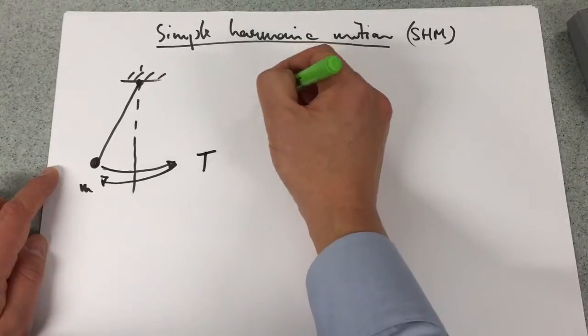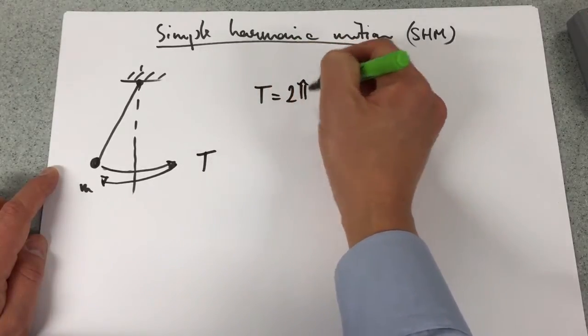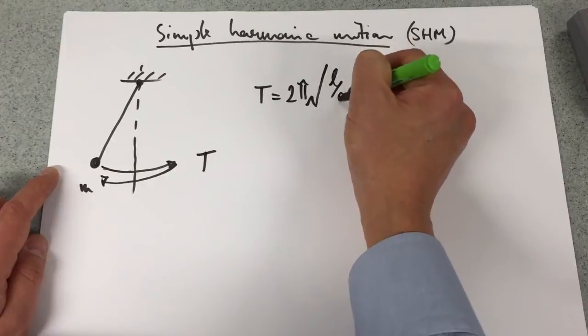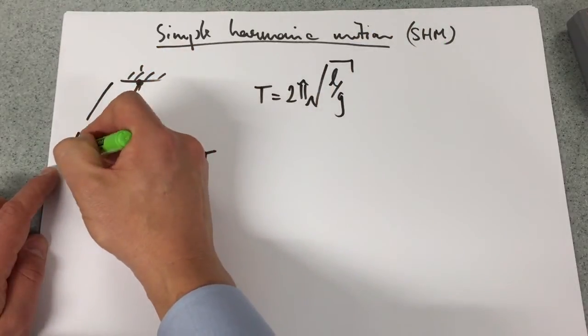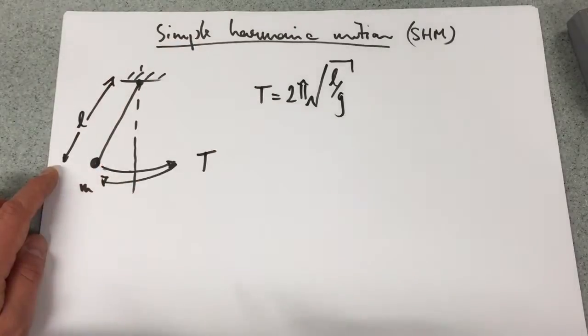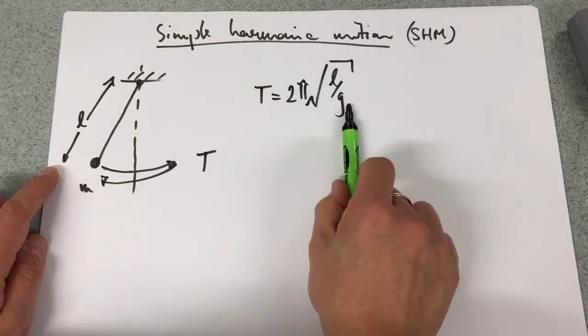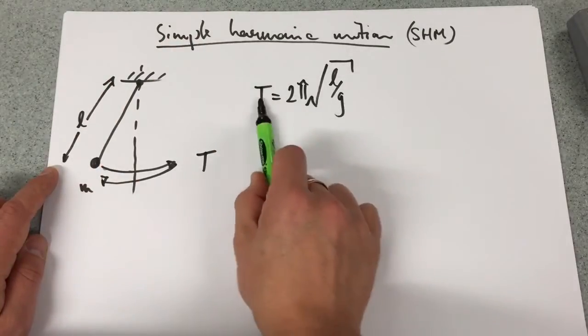Now as before, and in theory, you should know that the time period is 2π√(L/G), where L is the length of this pendulum. G is obviously G on Earth, 9.81, and the time period.